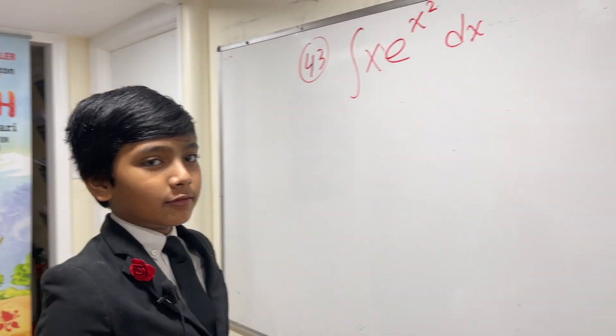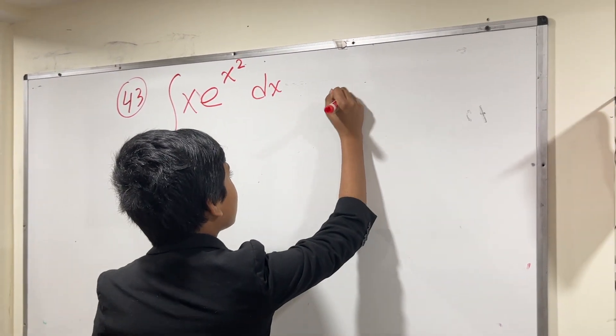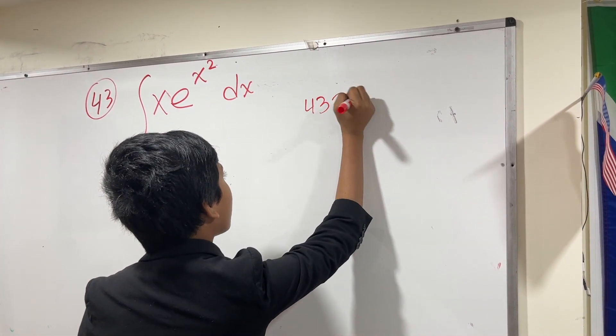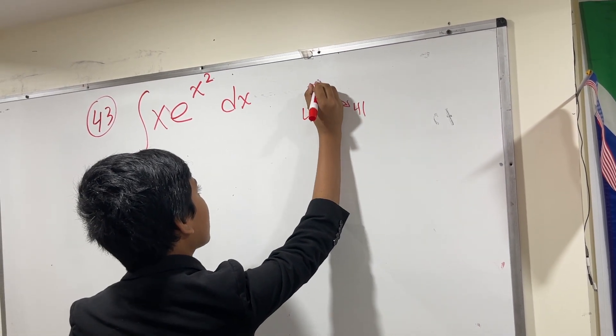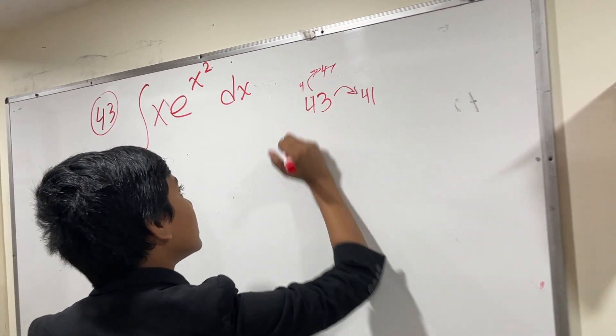Now 43 is a really cool number because it actually constitutes a twin prime with 41. And also it's a cousin prime, I believe, with 47 because it's four away.